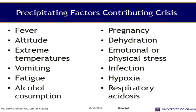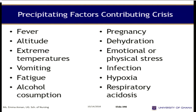Precipitating factors contributing to crisis include fever, altitude, extreme temperatures, vomiting, fatigue, alcohol consumption, and pregnancy — noting that children 13-15 years of age can become pregnant, and WHO defines a child as someone below age 18. Also dehydration, emotional or physical stress, infection, hypoxia, and respiratory acidosis can all precipitate crisis.